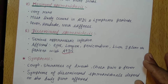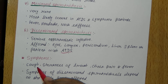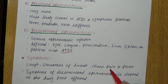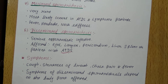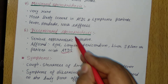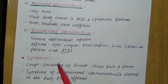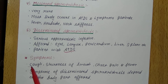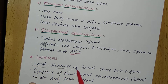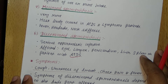What are the symptoms of Sporotrichosis or rose gardener's disease? Cough, shortness of breath, chest pain, and fever are the main symptoms. For disseminated Sporotrichosis, symptoms depend on the body parts where the infection occurs.